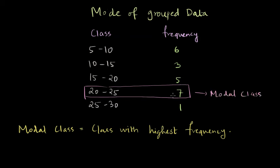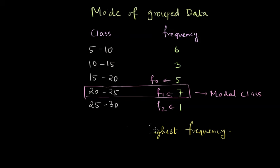The frequency associated with the modal class is known as F1 or we will call it F1. This is just a convention. The frequency of the class earlier to the modal class, we can write F0 for it. We need that in the mode formula and the frequency associated with the class after modal class is F2. We need F0 and F2 in the formula for mode.